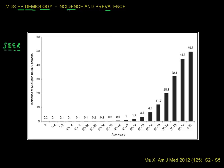If we start with the incidence of MDS, we must be reminded that incidence is a rate — a number of new cases per 100,000 people per year. On this graph, we can see incidence per hundred thousand persons per year on the y-axis, and age groups on the x-axis. It is clear from this graph that there is an exponential increase in the incidence of MDS in patients over the age of 50.